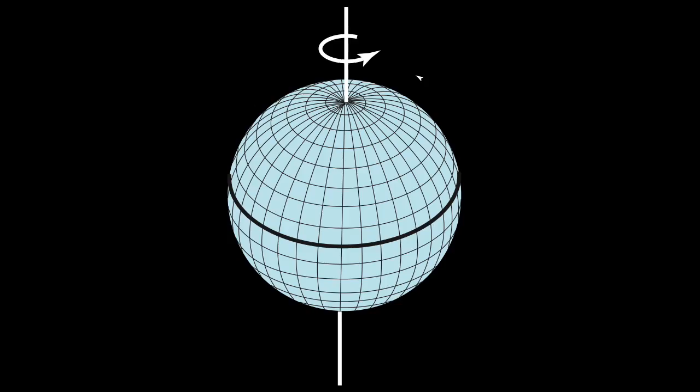True north is defined by the Earth's axis of rotation. It's visually apparent in nature by the fixed location of the north star in the northern hemisphere's night sky. Lines of longitude are all true north lines.